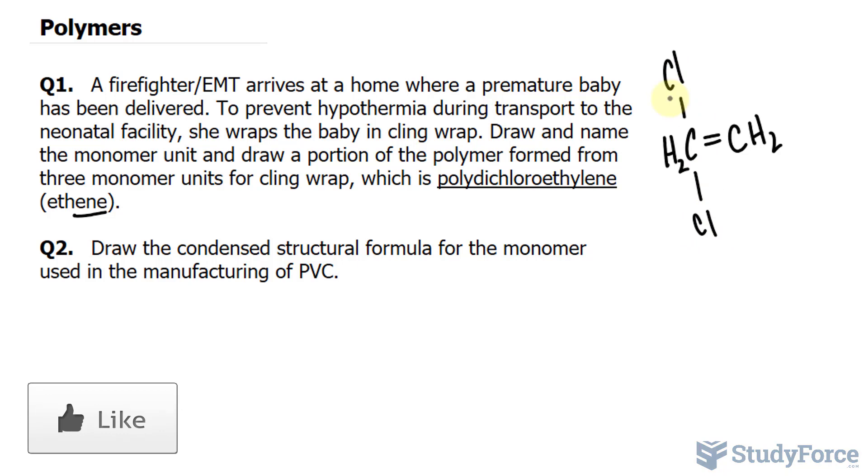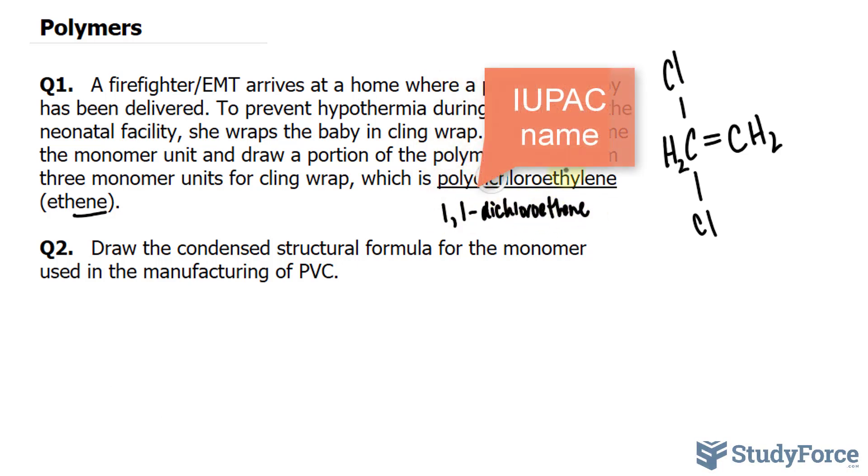So I'll put a chlorine here and a chlorine here. Another name for dichloroethylene is 1,1-dichloroethene. This is just a synonym for the following. And of course, if you put these chlorines, you lose the hydrogen on this carbon.